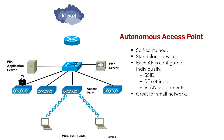That is the main limitation of autonomous APs. However, one feature is that they allow data to take a short and simple path. If two users are associated with the same autonomous AP, they can reach each other by just passing through the AP, without having to go through the wired or upstream network.